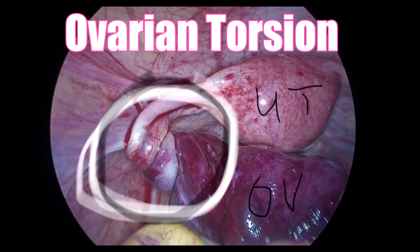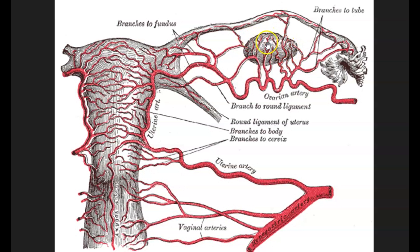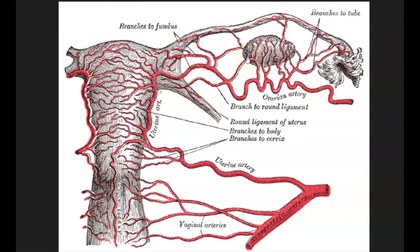Let's do a quick overview of ovarian torsion. Ovarian torsion occurs when the ovary spins or rotates on its axis, cutting off blood supply to the ovary. When ovarian torsion occurs, it usually occurs along with torsion of the fallopian tube, which is referred to as adnexal torsion.